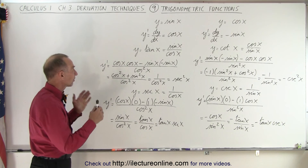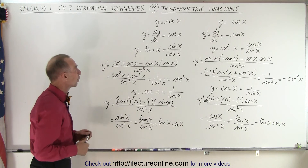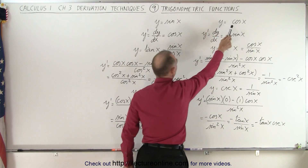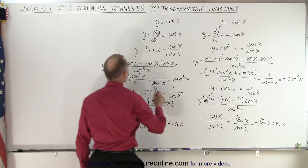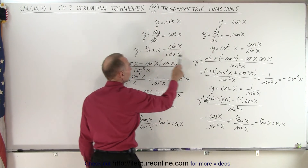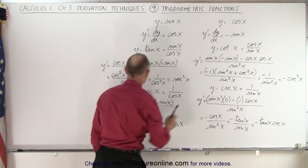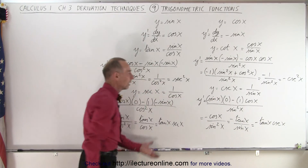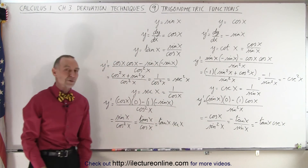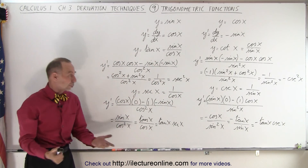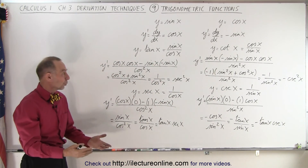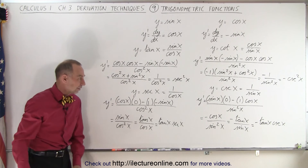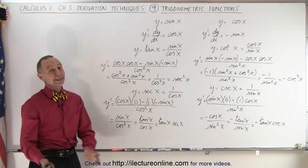This gives you a nice overview on finding the derivative of the sine, the cosine, the tangent, the cotangent, the secant, and the cosecant. Here we used the quotient rule in order to find the derivative of the last four. And that is how it's done.